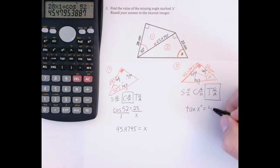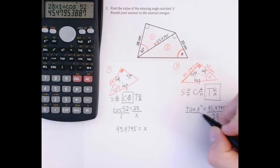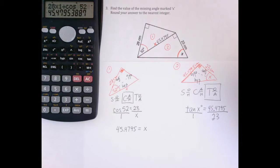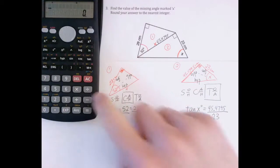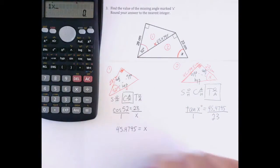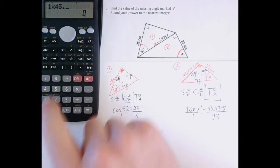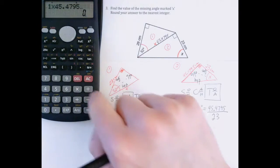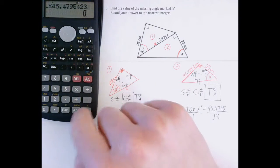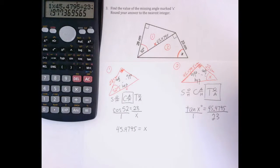Here my opposite, 45.4795 divided by adjacent, 23. Now again, just out of habit, I'm going to create equivalent fractions here. And to solve, I'm going to multiply my diagonals, divide by the other.